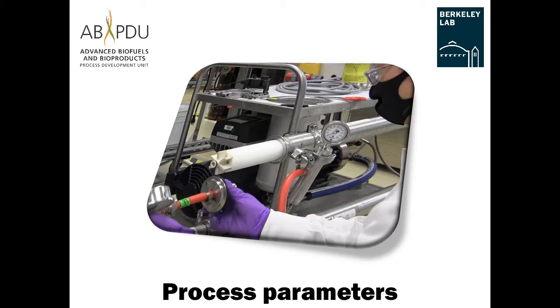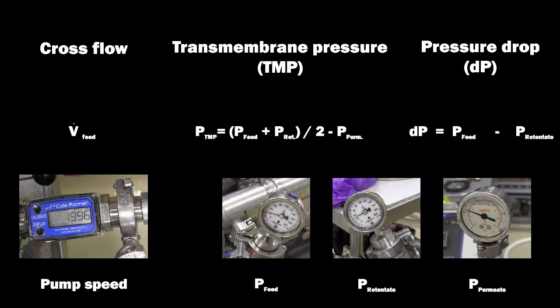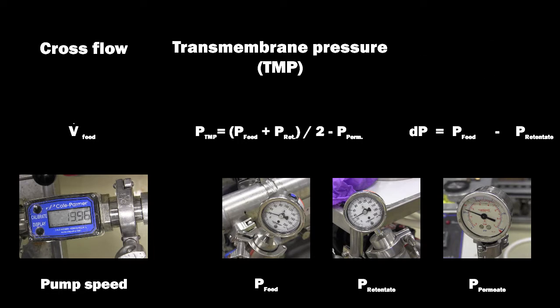The process parameters: Here we will give an overview of the key process parameters and controls involved with running the M20. The three key parameters are the feed cross flow rate, the transmembrane pressure or TMP, and the pressure drop or DP. It is critical that each parameter is operated within the range as specified in the membrane product documentation to ensure optimal process performance and to avoid process failure or damaging the membrane.